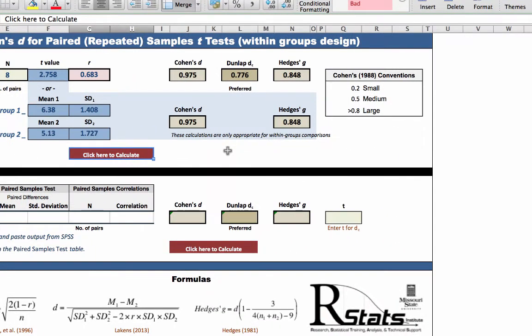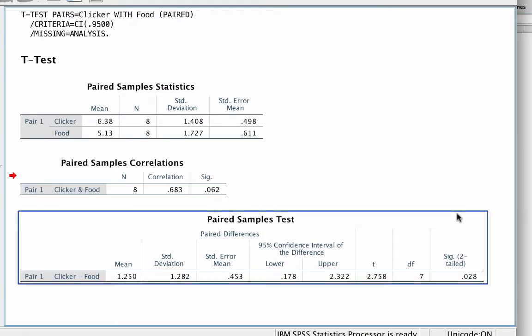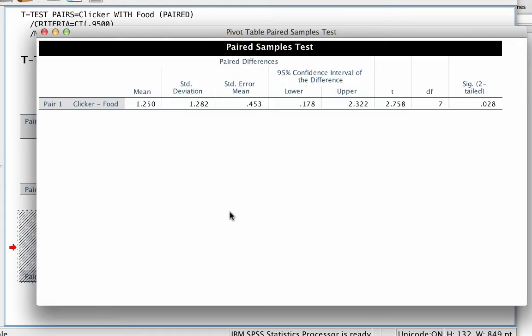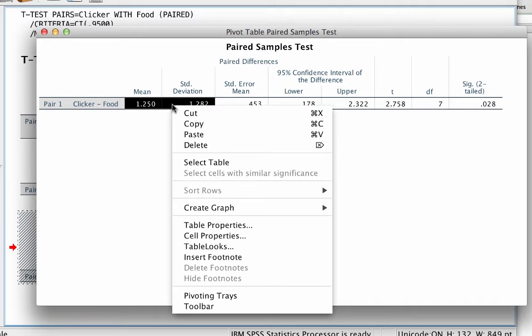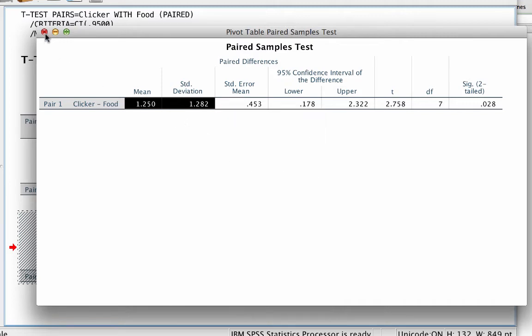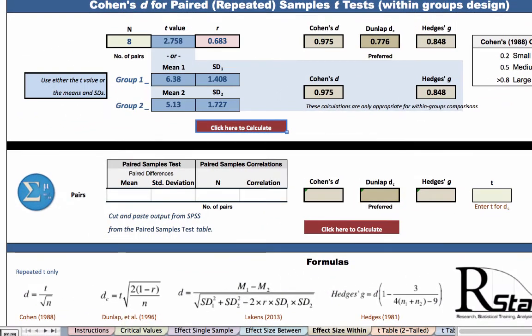This third option uses the output from SPSS. To get the measures of effect size using this option, you should go to the SPSS output window. Double click on the paired samples test box to activate it. Here we are using the paired differences output. These are the mean of the paired differences and the standard deviation of the paired differences. Highlight, copy, then flip back to the rStats effect size calculator for t-tests and paste the output here.